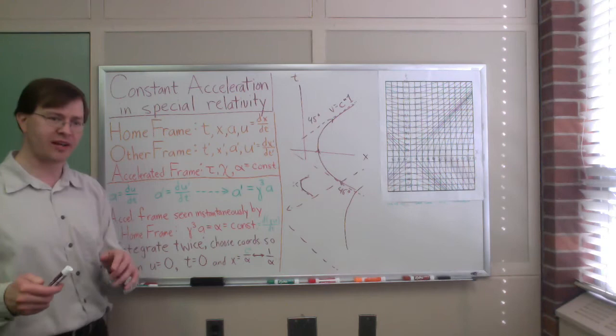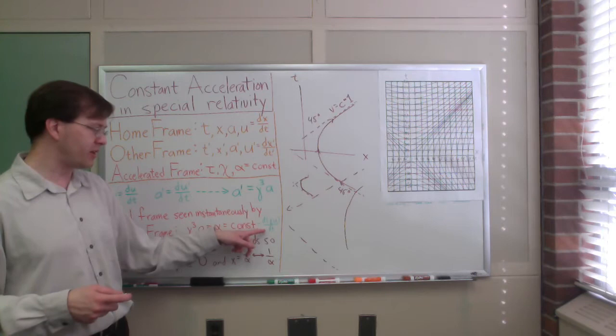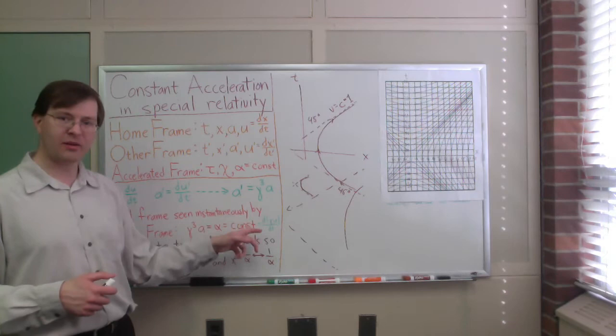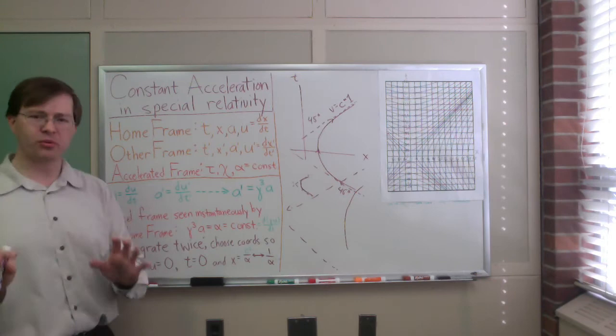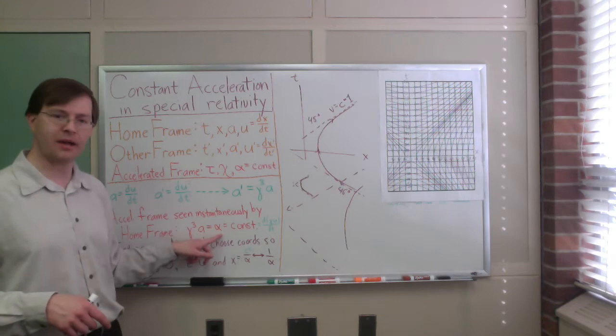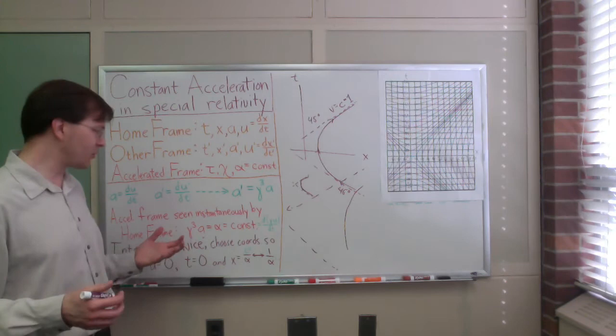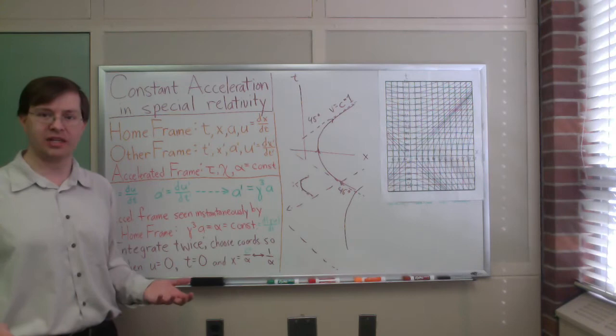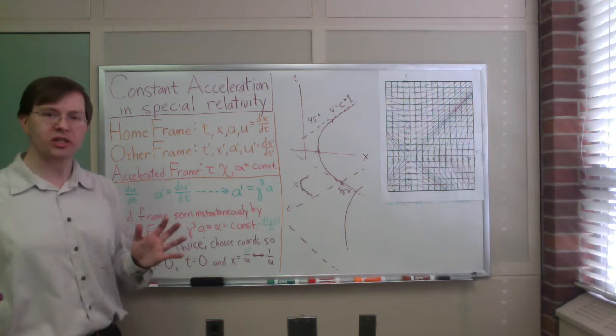This is tedious but doable — you can solve this differential equation. Here's a hint if you want to try it at home: there's a clever identity where the time derivative of gamma times u equals gamma cubed times du/dt. If you can prove that, then all you need to do is integrate alpha with respect to time, and you'll have something you can solve for u as a function of time and alpha. Once you've done that, integrate again with respect to time to find position as a function of time.